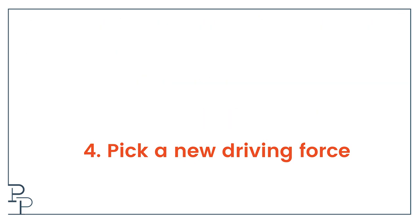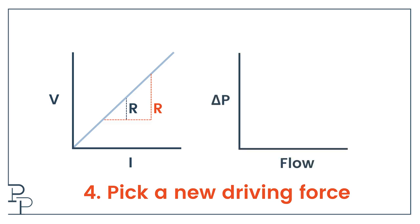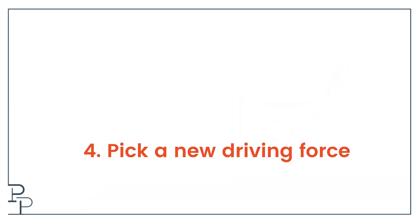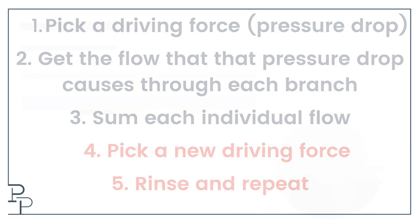Now onto step 4, which we did not have when we were looking at electrical circuits. Pick a new driving force. Because of Ohm's law, I know that doubling the voltage doubles the current across the same resistor. Doubling the differential pressure across a system does not double the flow. To know what effect it has, you would need to know what the system curve for each branch looks like. So you would have to pick a new pressure drop and repeat the process. Keep going until you have covered all differential pressures you are likely to encounter in your system. Now let's look at an actual example.